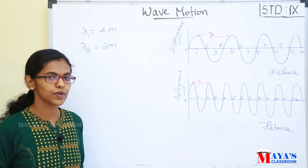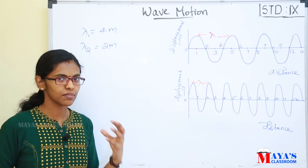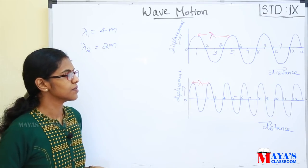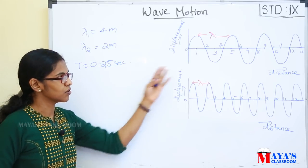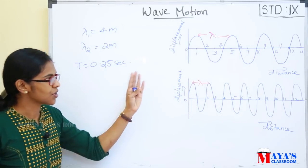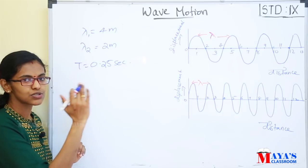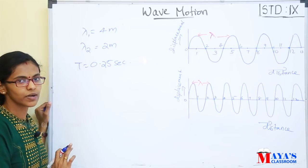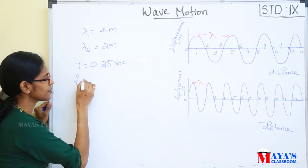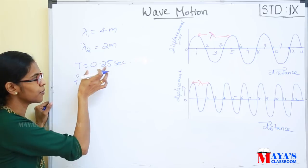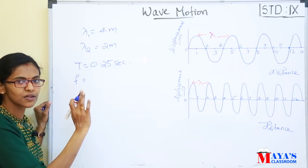The frequency is the number of vibrations per second. In 0.25 seconds, the wave travels 12 meters. How much vibration is in 0.25 seconds?